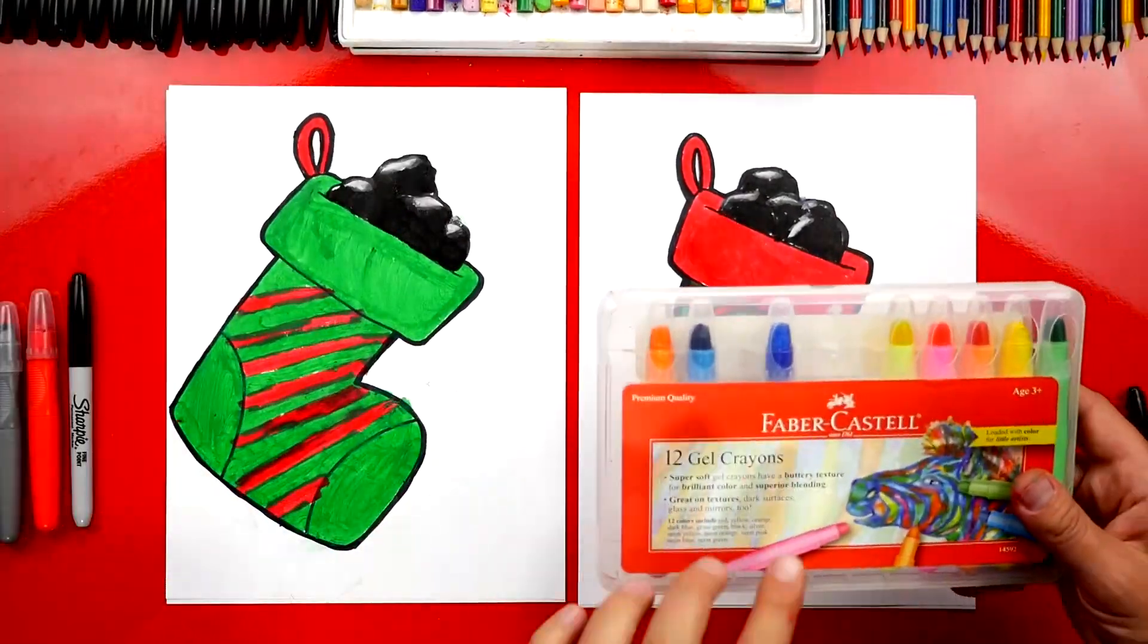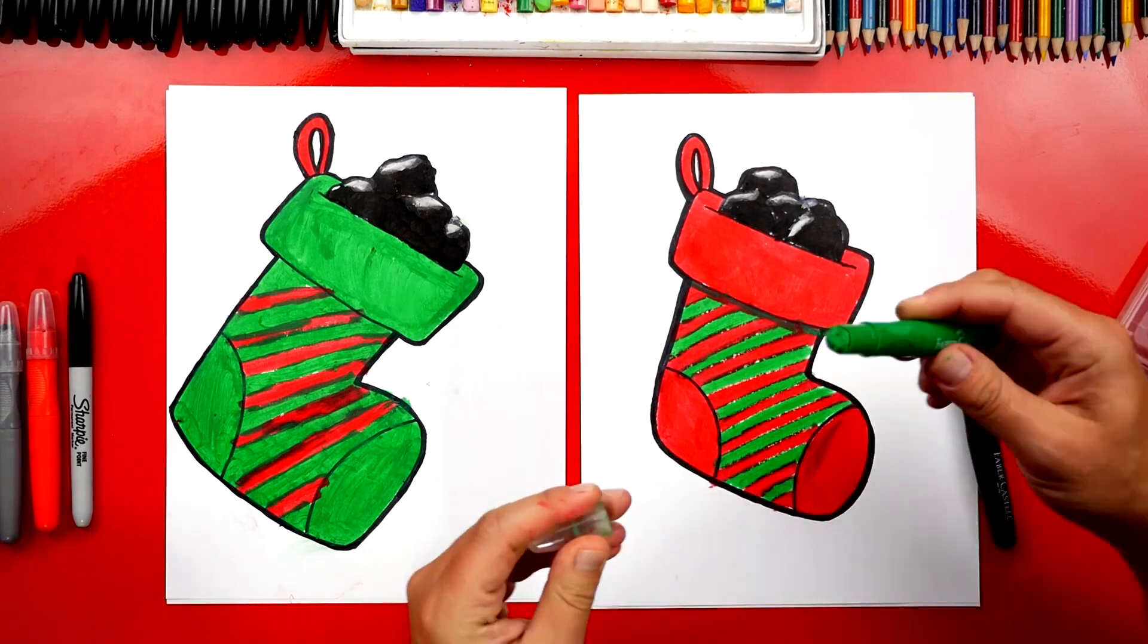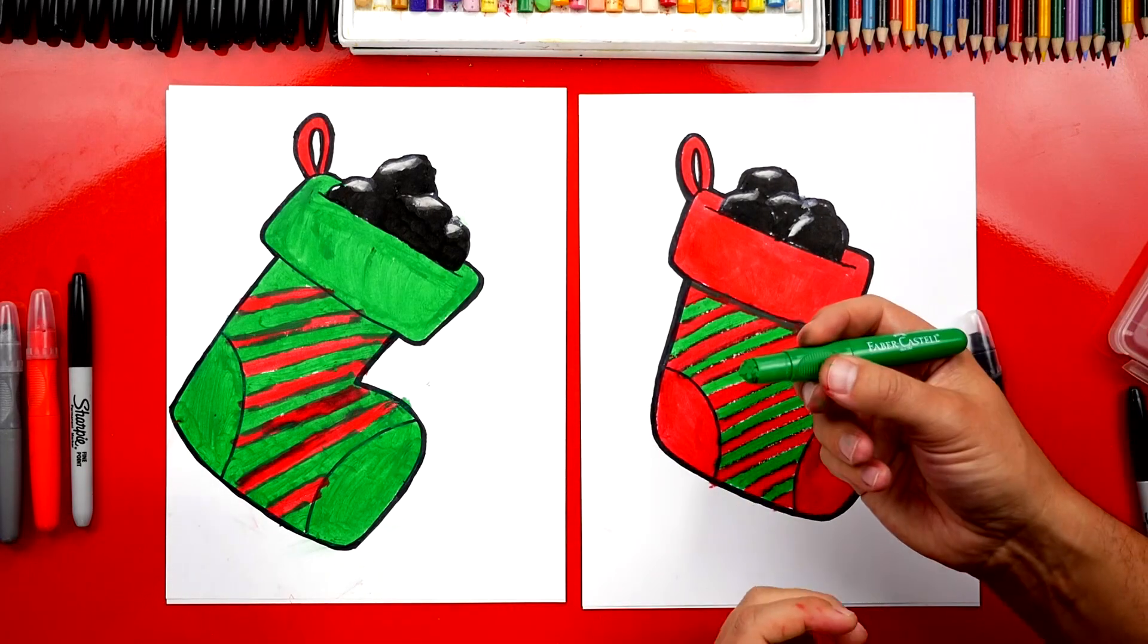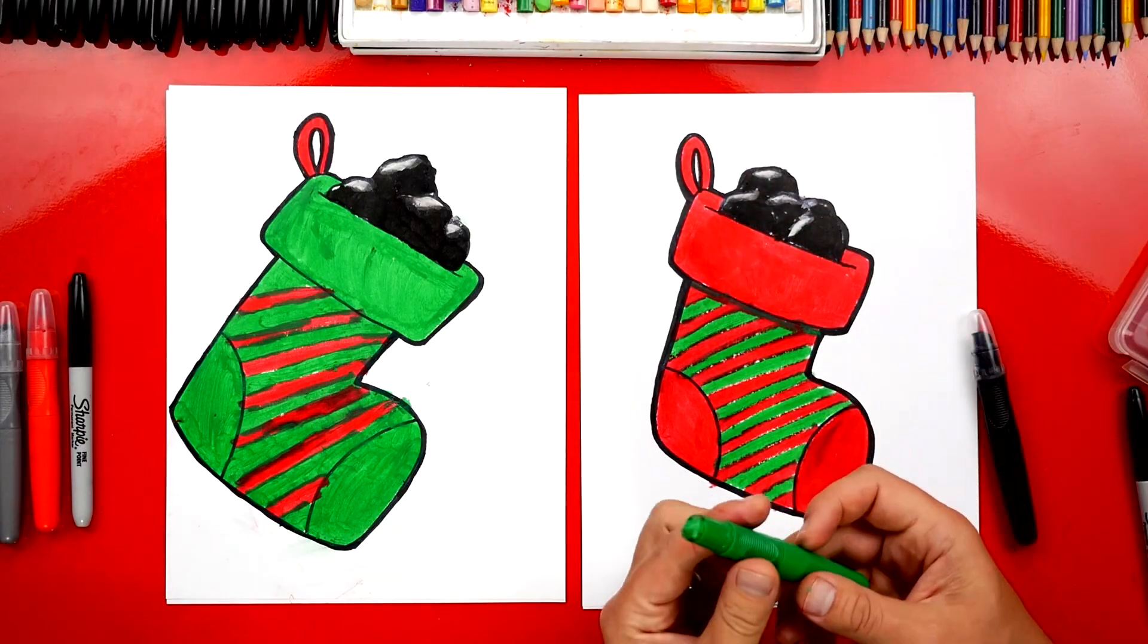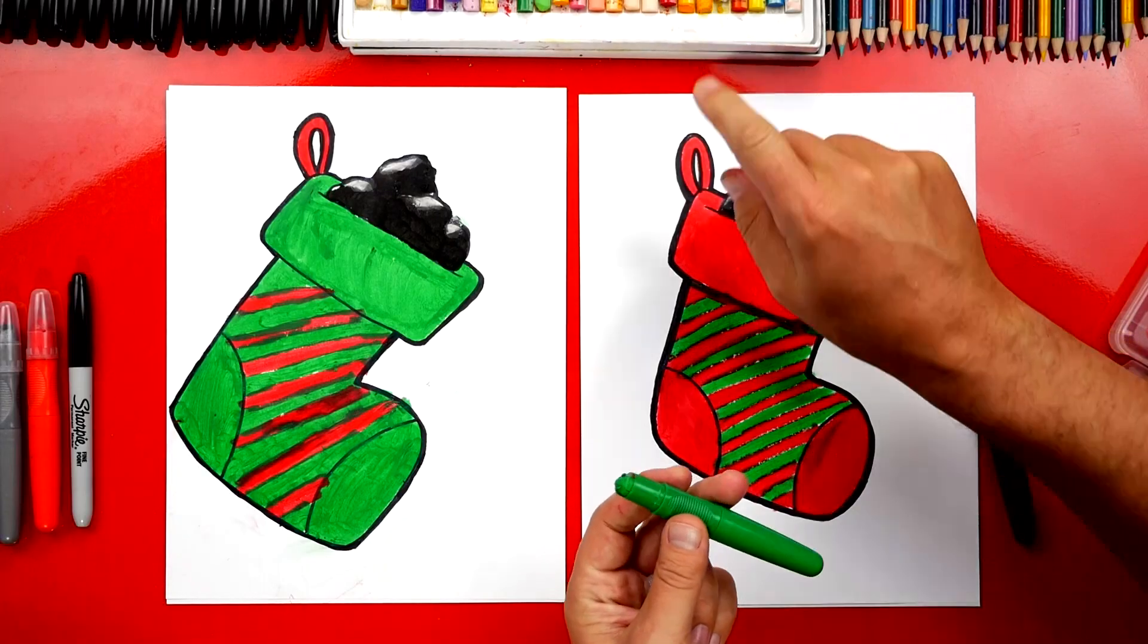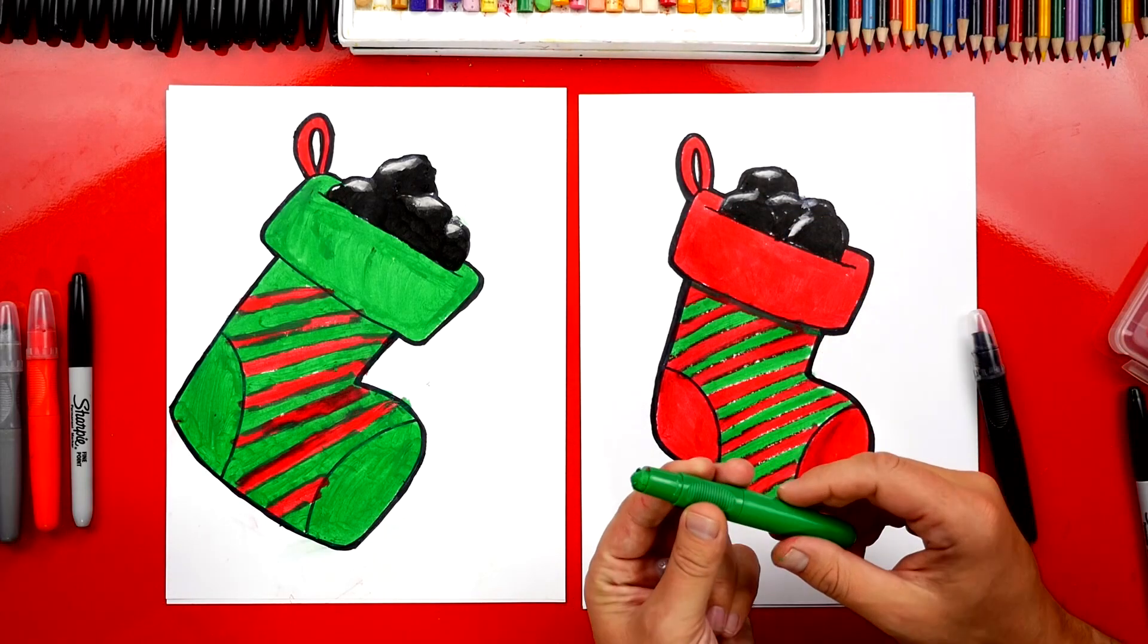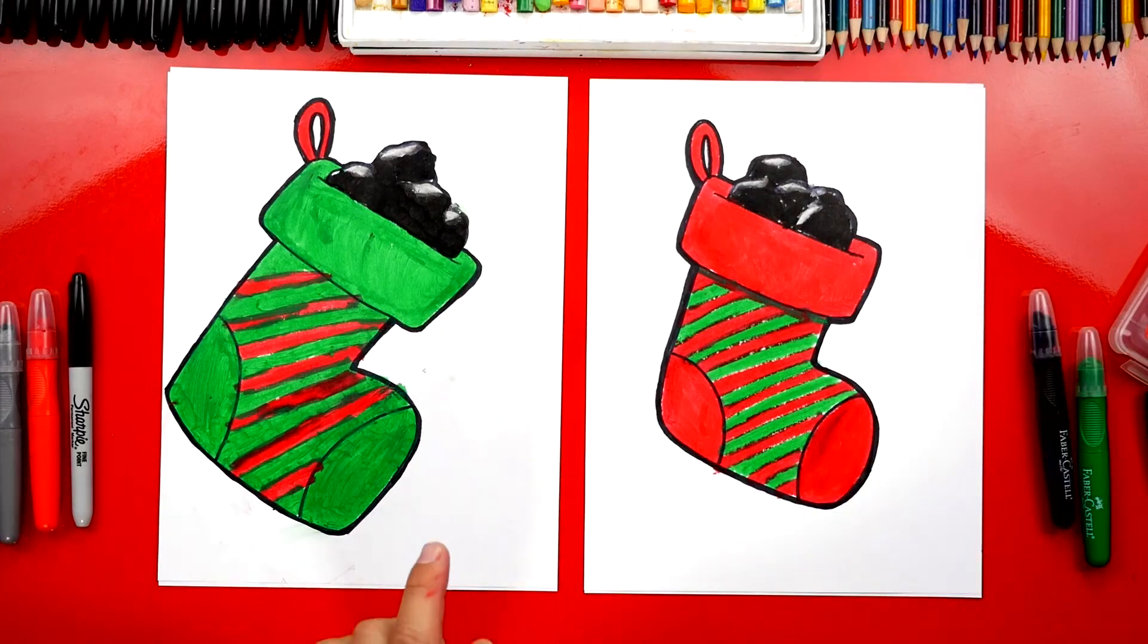One of the things I really like about these gel crayons is that there's a case around the material, so it's not as messy when you're holding it. Even though they're still a little messy like oil pastels. But also it protects it from breaking. Oil pastels are super soft, so they break a lot. When you need more, you can just twist the end like this and it comes up.